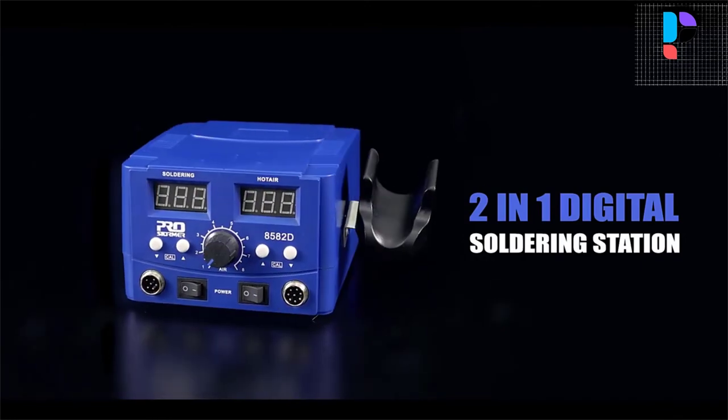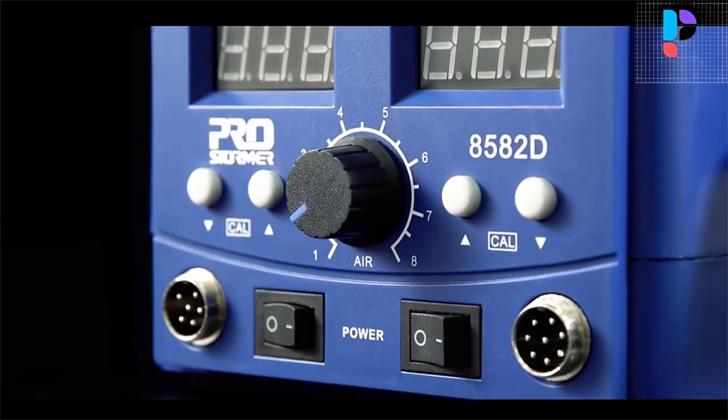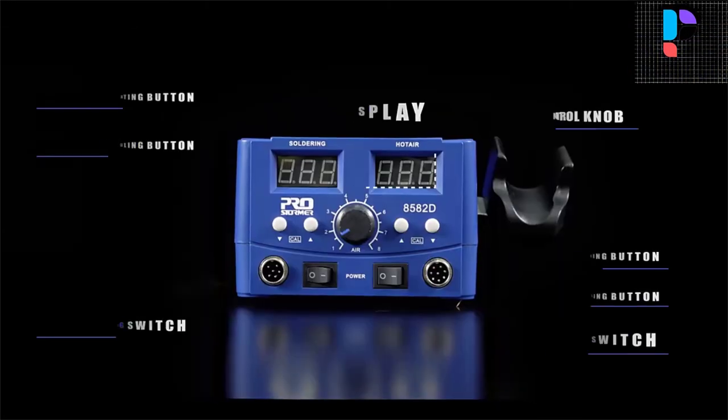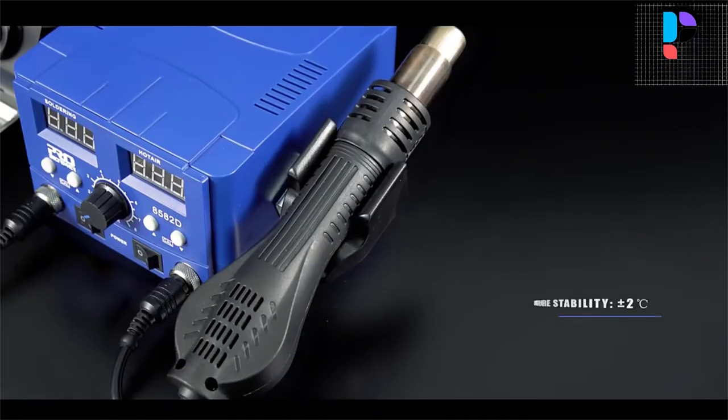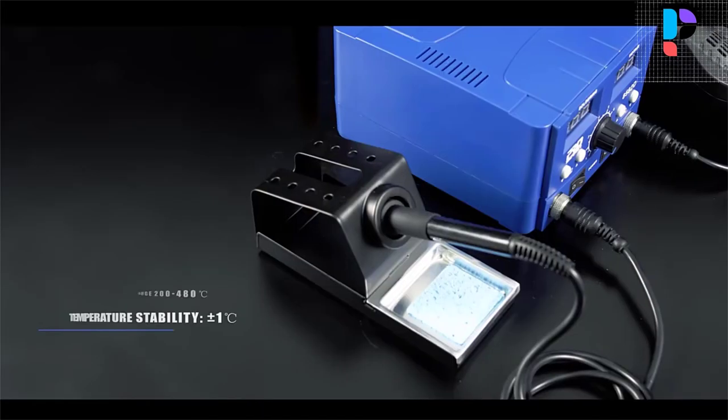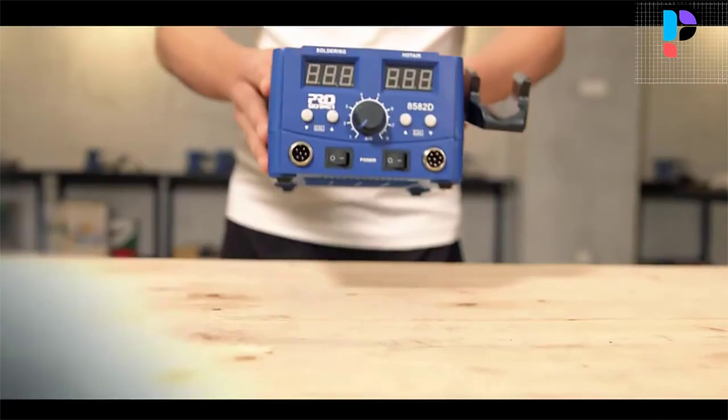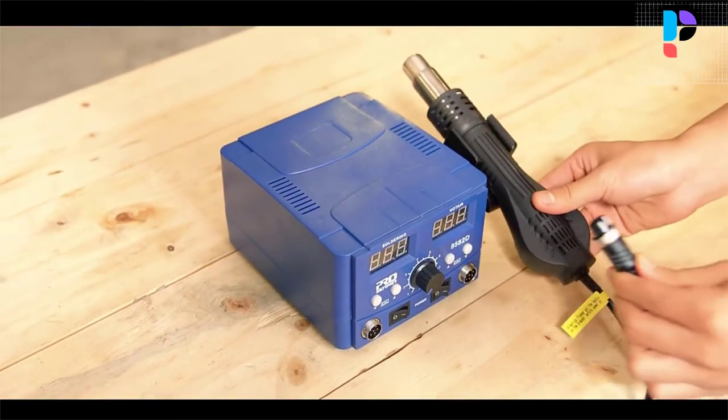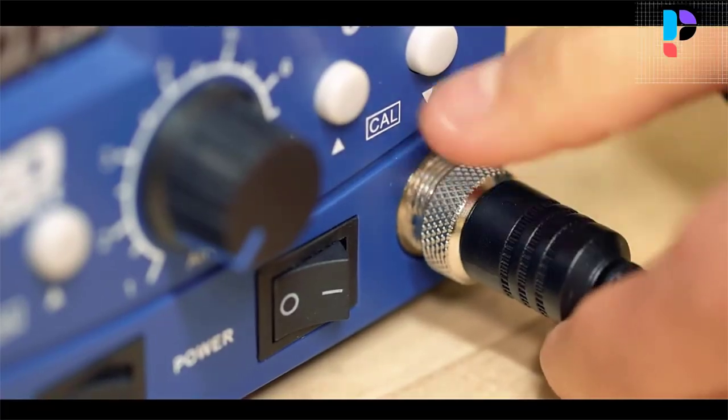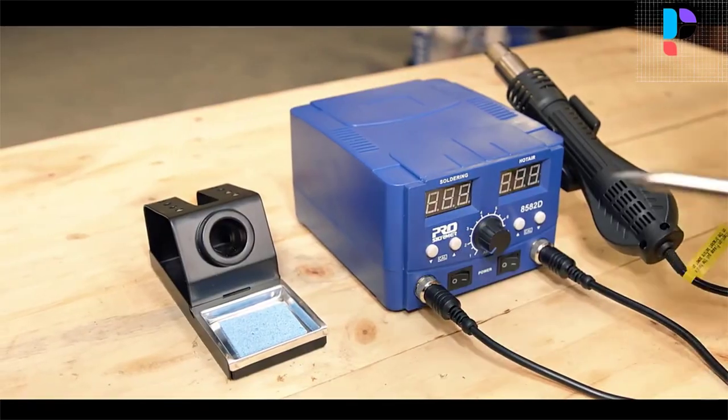It's equipped with an electric soldering iron and a hot air gun. 800 watt power, 110 volt voltage, with smart LED display lights, dual control switches, automatic cooling, suitable for home maintenance such as mobile phones, computers, circuit boards, etc.